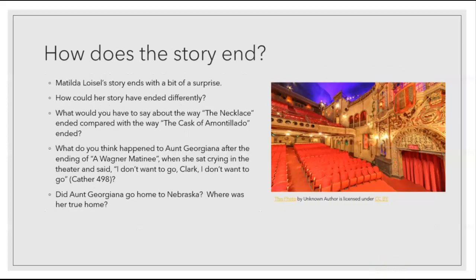How does the story end? Matilda Loisel's story ends with a surprise. How could her story have ended differently? What would you have to say about the way The Necklace ended compared with the way The Cask of Amontillado ended? What do you think happened to Aunt Georgiana after the ending of A Wagner Matinee, when she sat crying in the theater and said, "I don't want to go, Clark, I don't want to go"? We have to think about where she doesn't want to go — back to his house, or back to the farm — and did she go back home to Nebraska? Where was her true home? Was that part of the main point of the story?